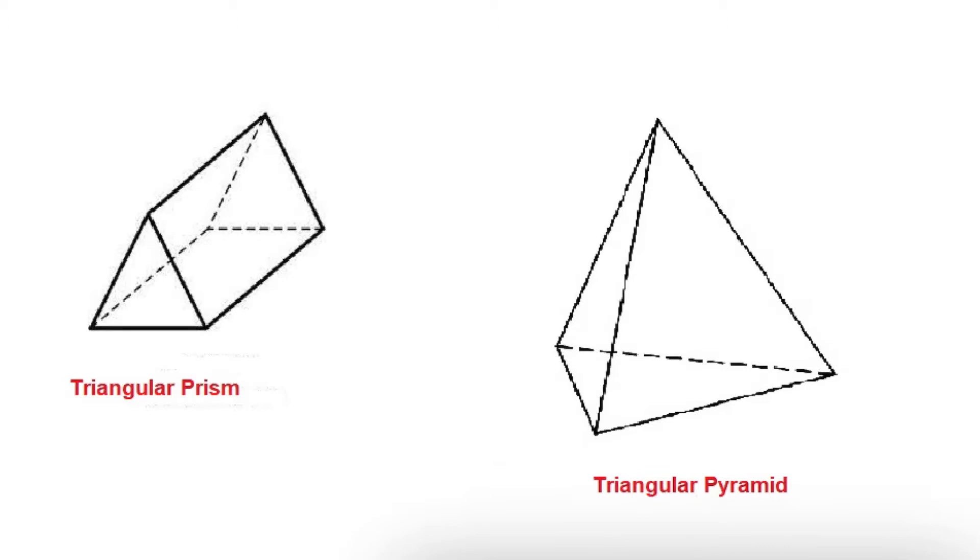The characteristics of a prism is they have two bases that are congruent. And the two bases are the triangles, this triangle and this triangle. So that's the characteristics of a prism.